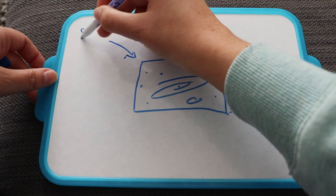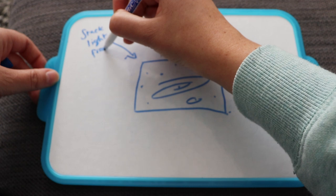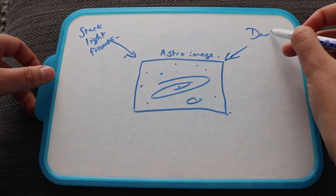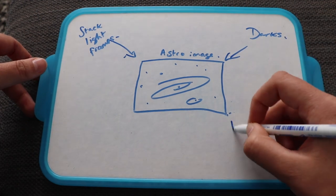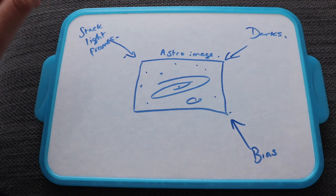So all of these things go into it. So a stack of light frames, dark frames, bias.